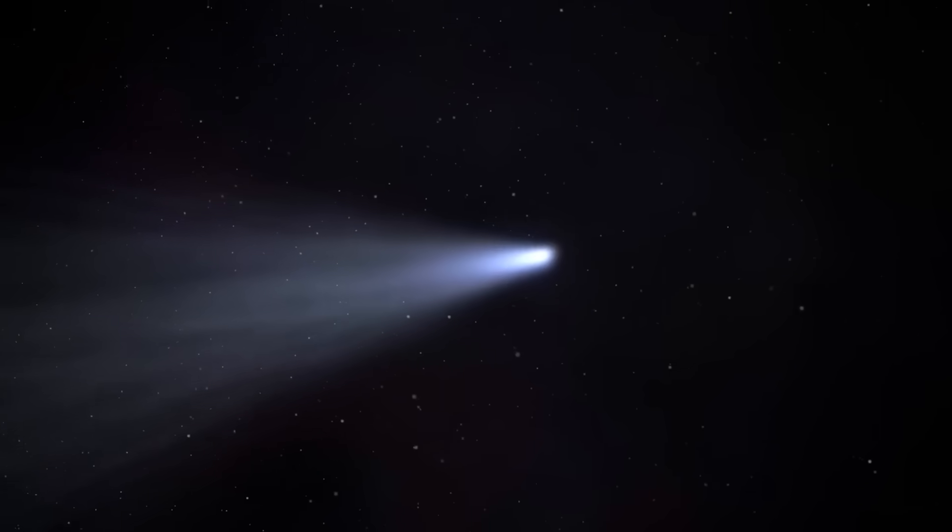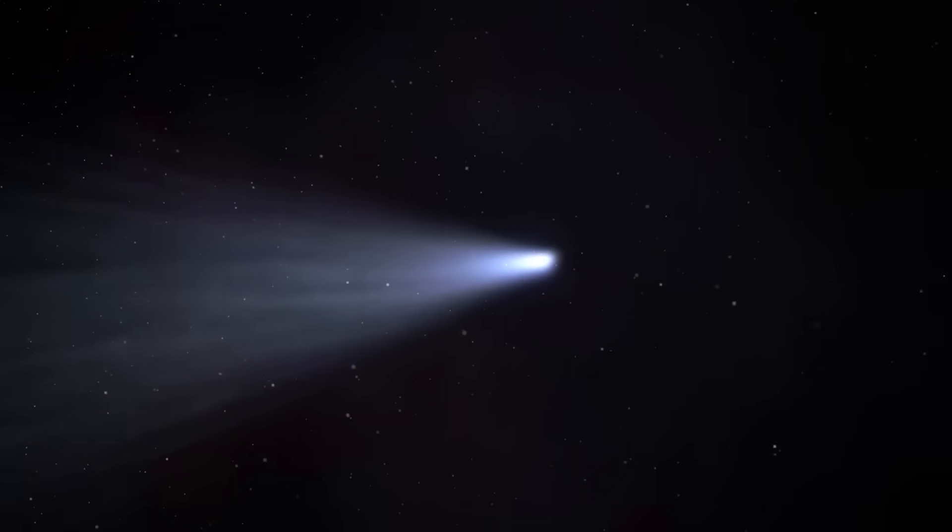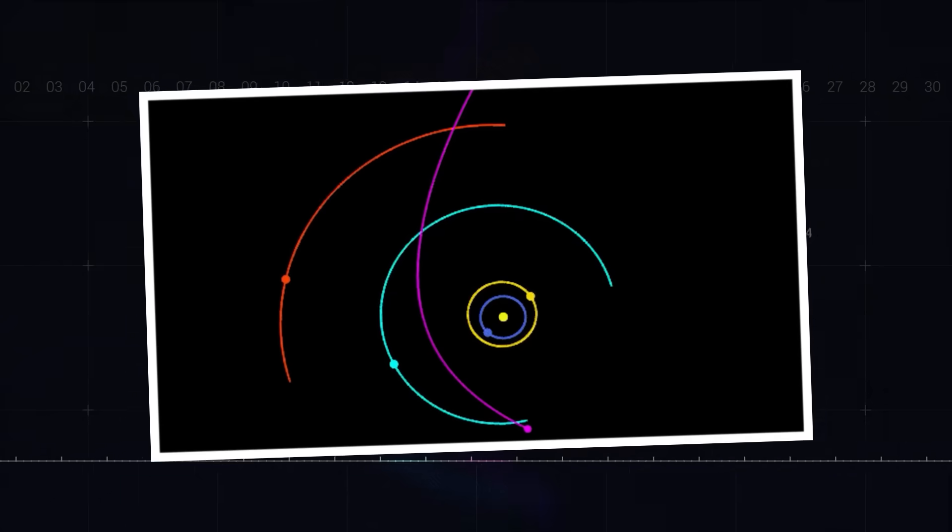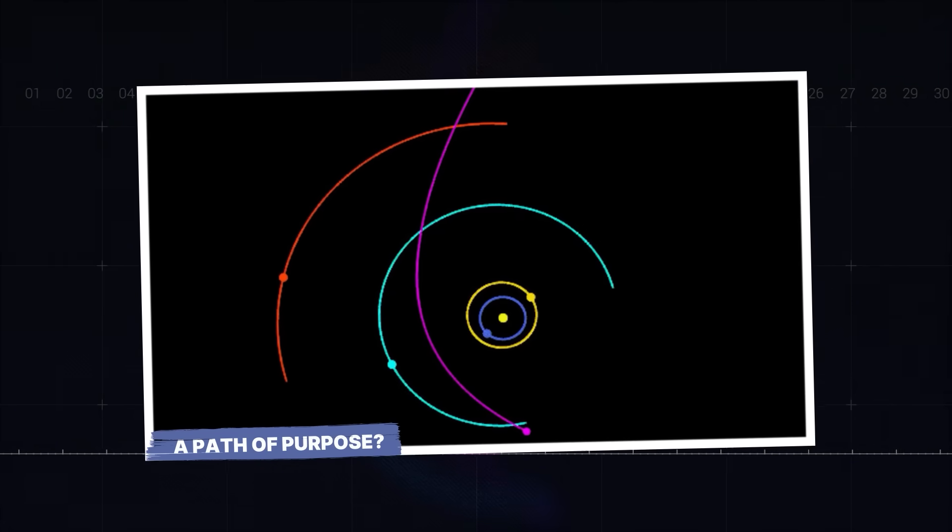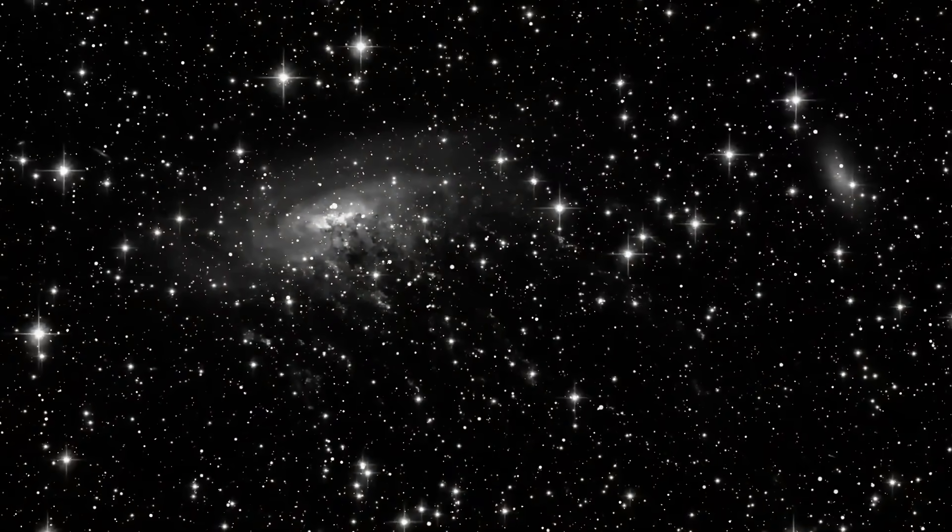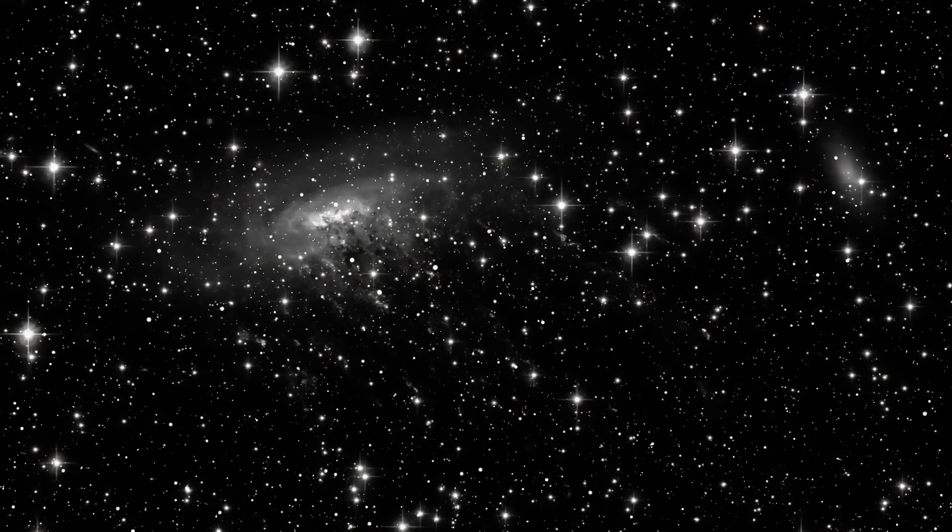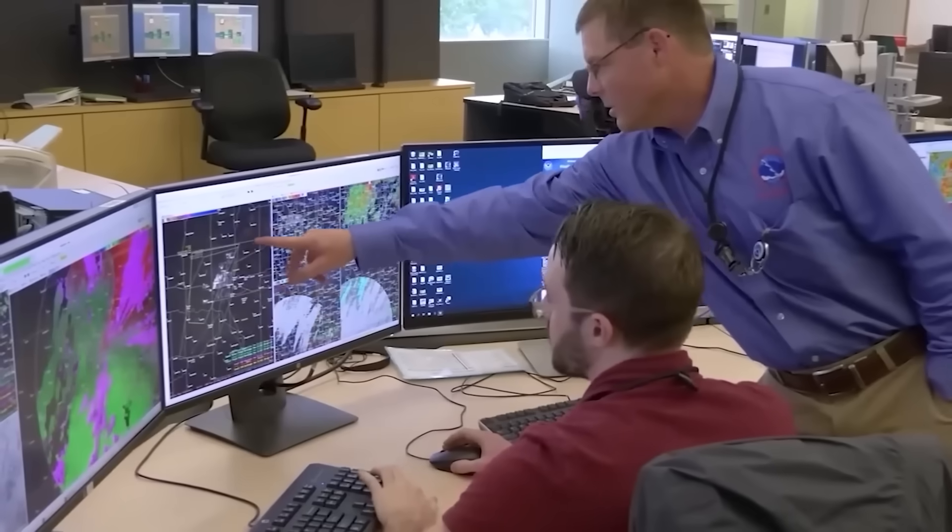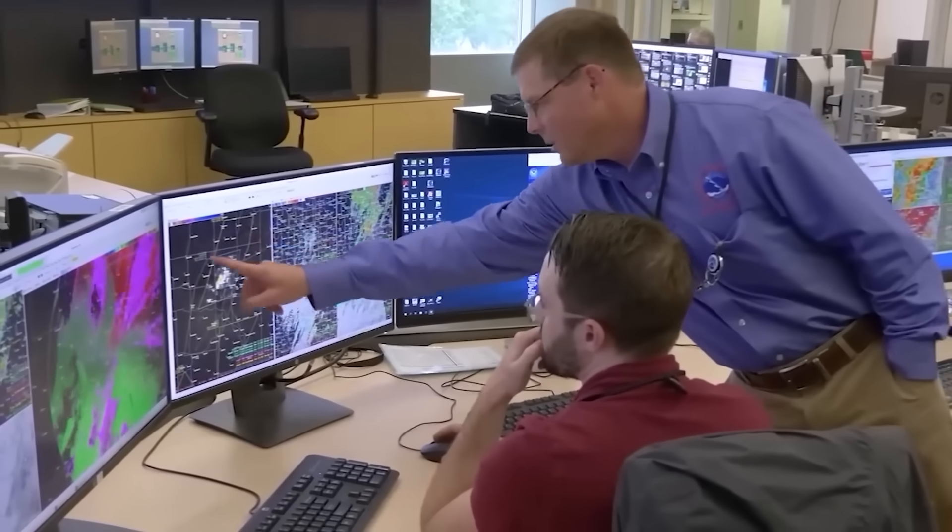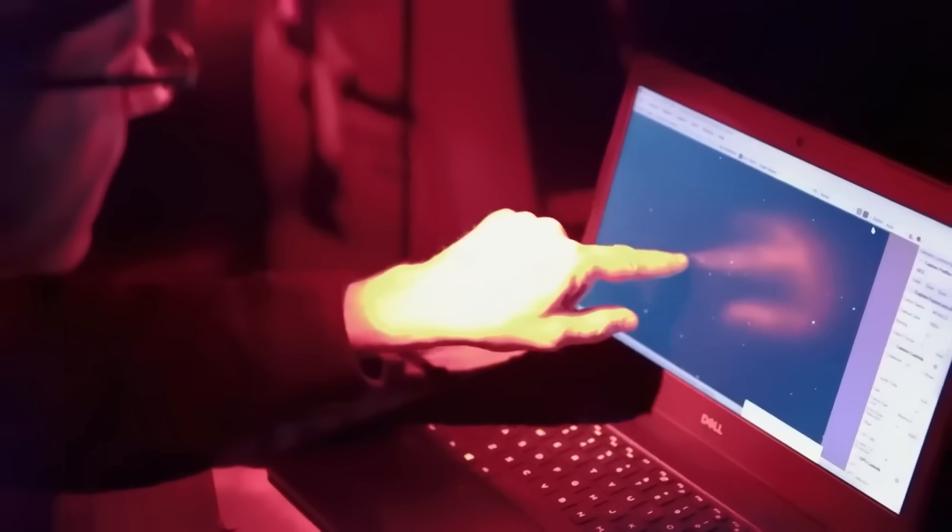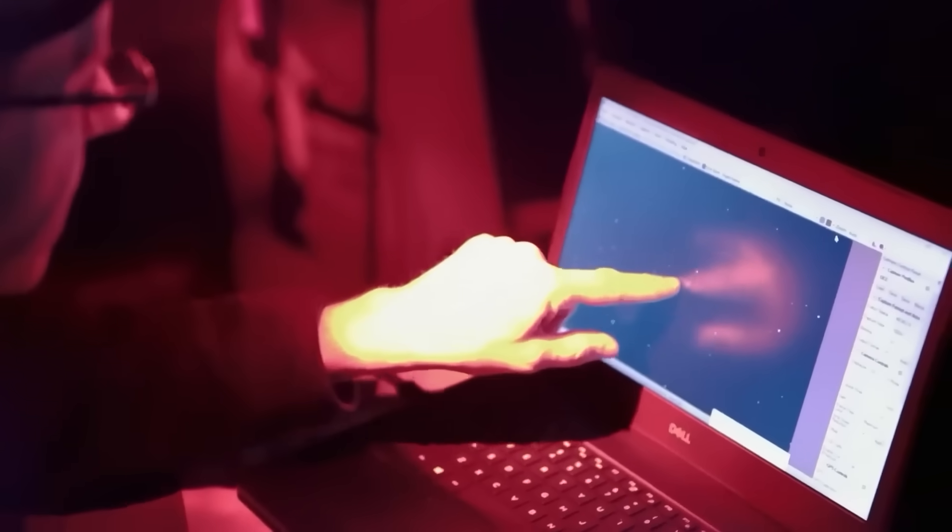The mystery only deepens from here. But its impossible energy source wasn't the only secret it was hiding. A path of purpose. When an object travels for millions or even billions of years between the stars, you'd expect its path to be random. It should come in at any old angle, from any direction. But 3I Atlas is different. Its trajectory is suspiciously neat.